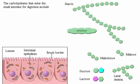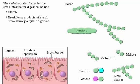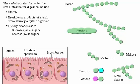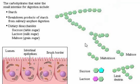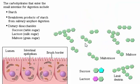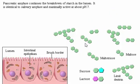The carbohydrates that enter the small intestine for digestion include starch, its breakdown products from salivary amylase digestion, and the dietary disaccharides sucrose, lactose, and maltose. Pancreatic amylase continues the breakdown of starch in the lumen. It is identical to salivary amylase and maximally active at about pH 7.